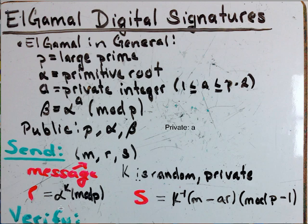So R = alpha^K mod P, and S = K^(-1) times (M - AR) mod (P - 1). Remember, things are mod P minus 1 when they're in the exponent.